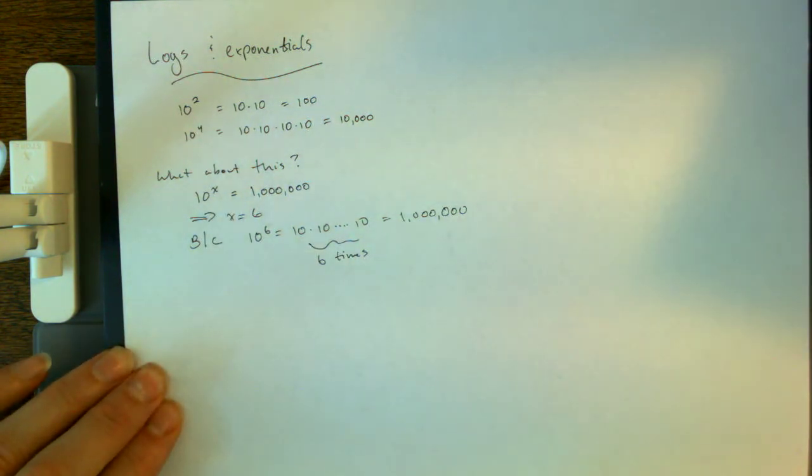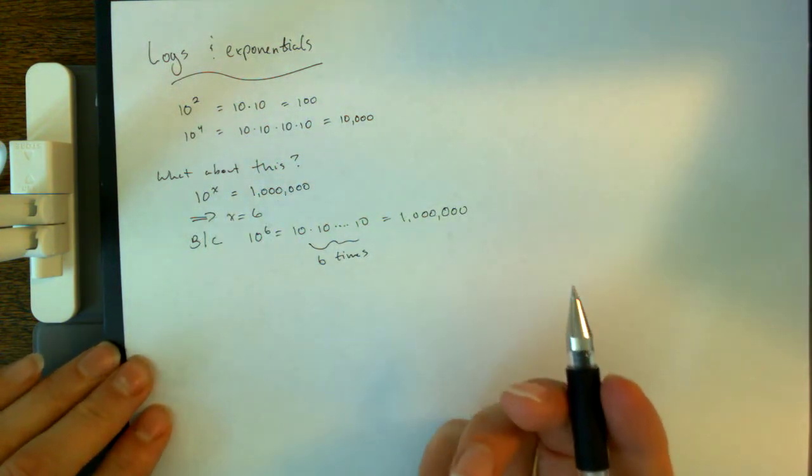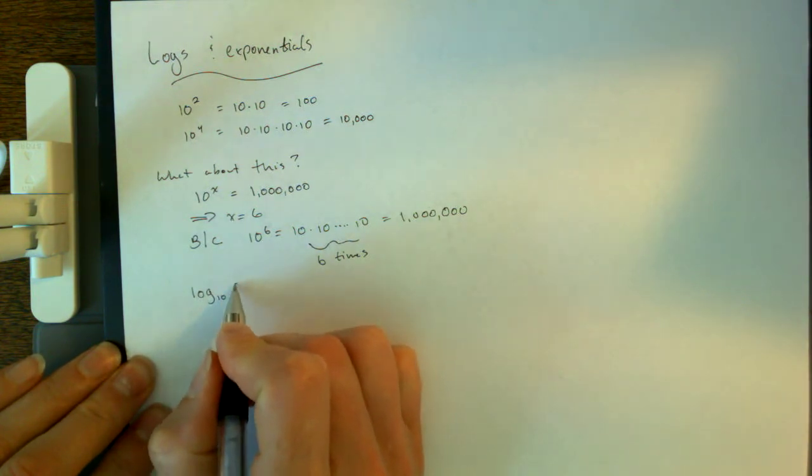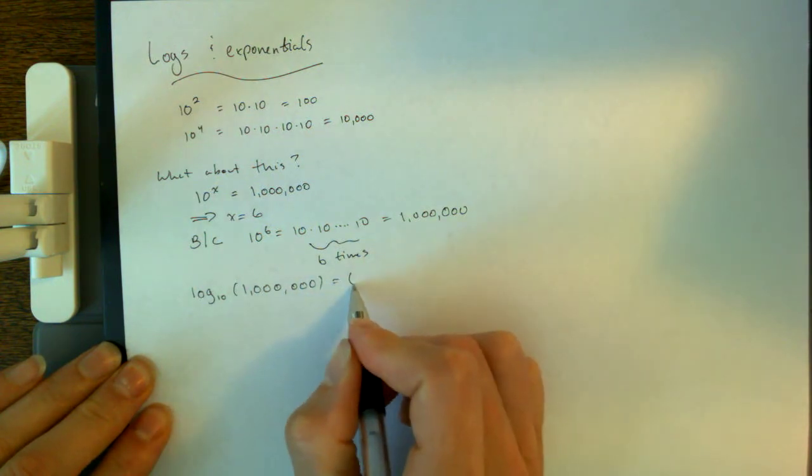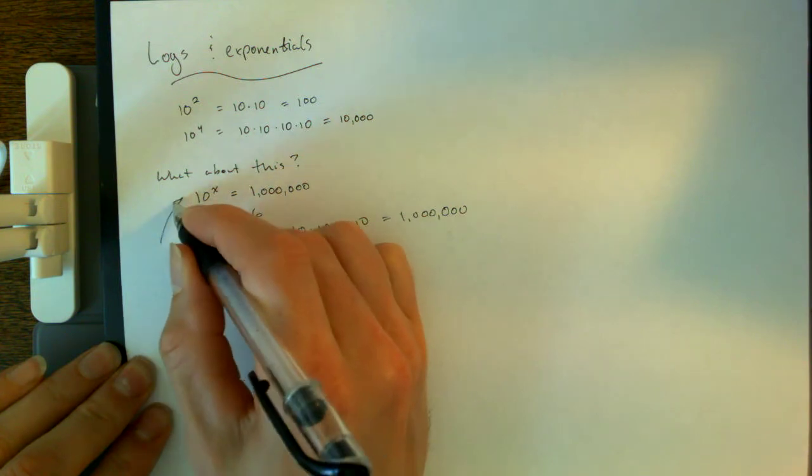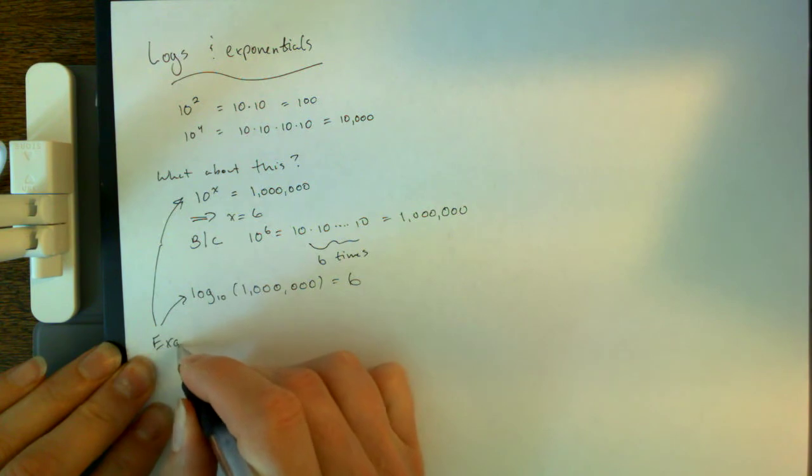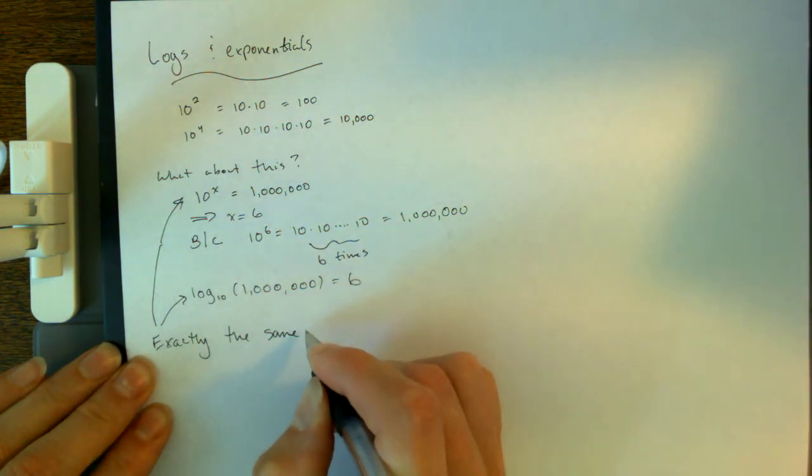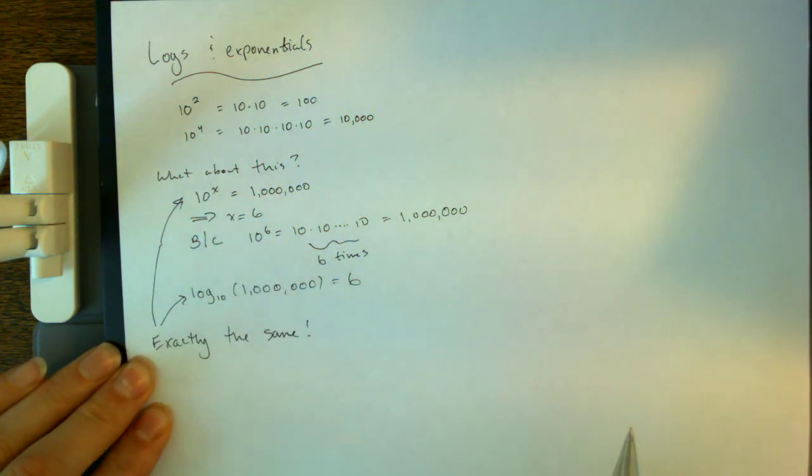Now, we can express this relationship right here, 10 to what power equals a million using a log, and we would do it like this, is to say that log base 10 of 1,000,000 equals 6. And if we take this statement right here, and this statement right here, these are exactly the same, right? They are both expressing the idea that we have to raise 10 to the power 6 in order to get a million.